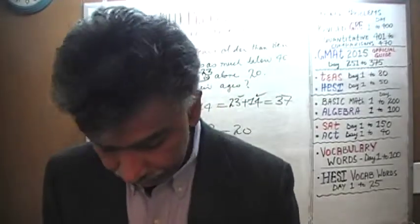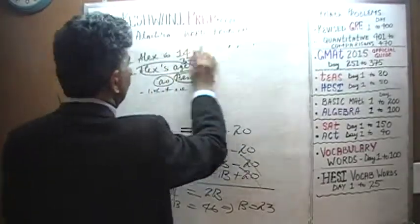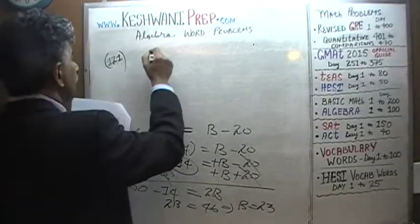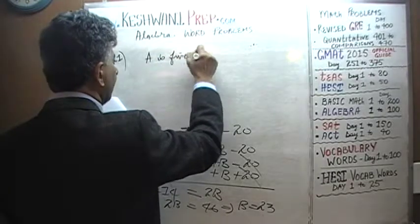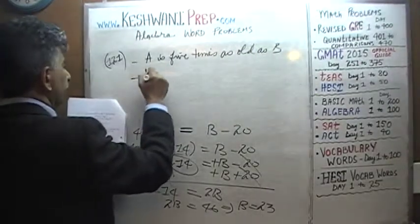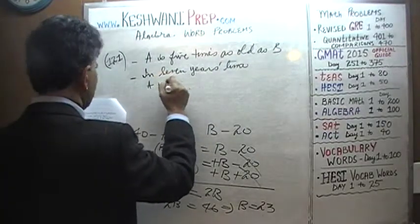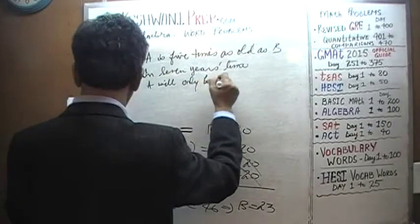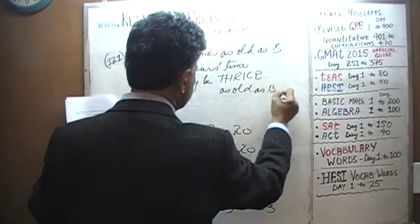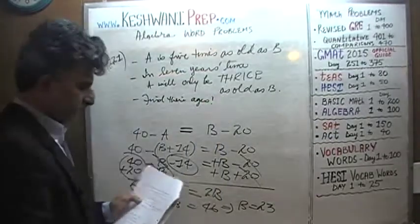Let's do one more — problem 121. We need to erase the board. We are told that A is five times as old as B. We are also told that in seven years' time, A will only be thrice as old as B. Find their ages.